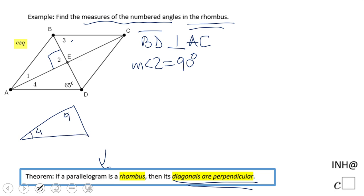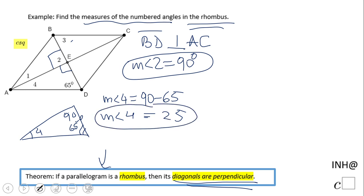And this is 90 degrees, this one right, and the 65. So basically the measure of angle 4 will be 90 minus 65, because they are complementary angles. So the measure of angle 4 will be 25 degrees.